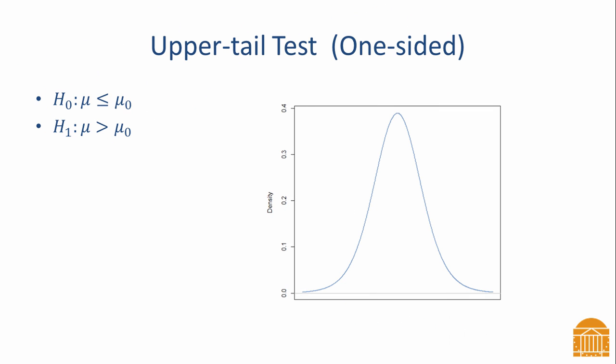The alternative hypothesis for an upper tailed test states that the population mean is greater than some value. And the null hypothesis indicates that the mean is less than or equal to some value. This puts the rejection region in the upper tail of the distribution.